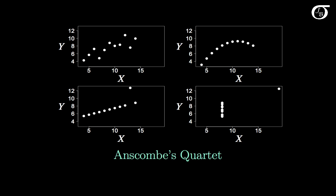What's so interesting about these four data sets? Well, it might be a little bit more obvious if I fit in the least squares regression line in each case. The interesting thing about these four data sets is that they all have the same summary statistics.